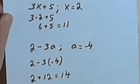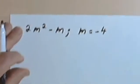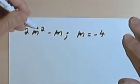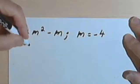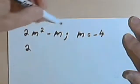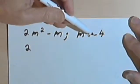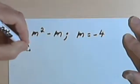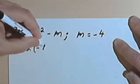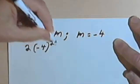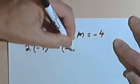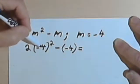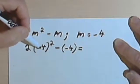Here's a few more. We've got 2m squared minus m, and once again we've got a negative: m equals negative 4. I want to substitute negative 4 for m. Now when you substitute with a negative number, sometimes it's a good idea to put parentheses around the whole thing. So I'm going to write negative 4 squared, then minus another parentheses negative 4. Negative 4 squared is going to be positive — it's going to be 16.